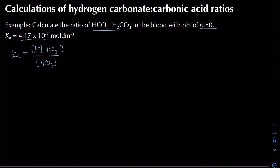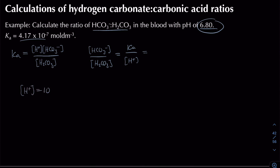Rearranging the Ka expression to get the ratio [HCO₃⁻] / [H₂CO₃] gives Ka / [H+]. Since we don't have [H+] directly, we calculate it from the pH: [H+] = 10^(−6.8) = 1.58 × 10⁻⁷ mol dm⁻³.